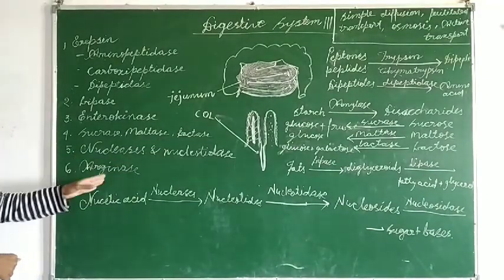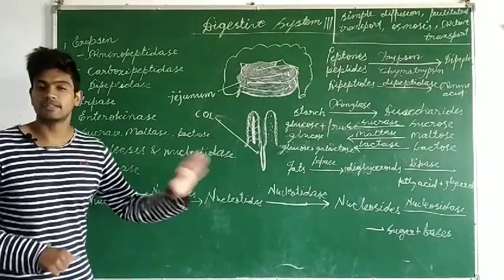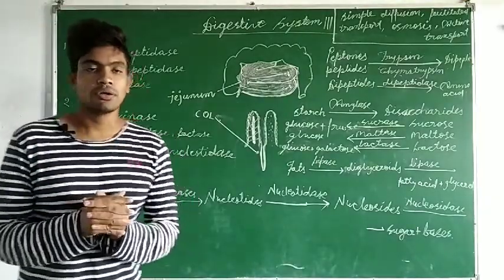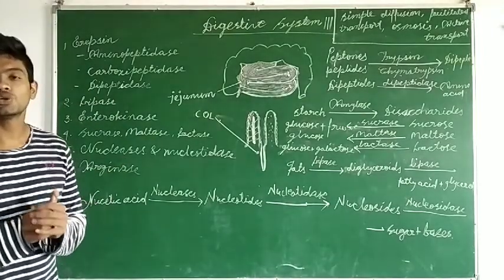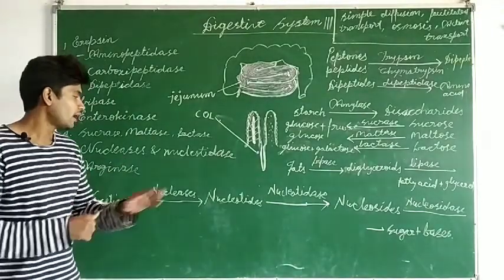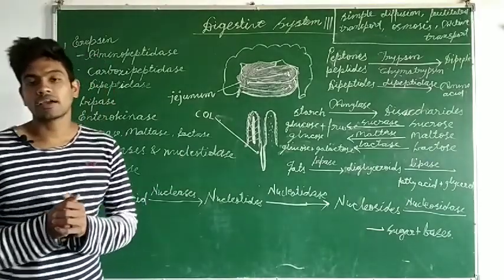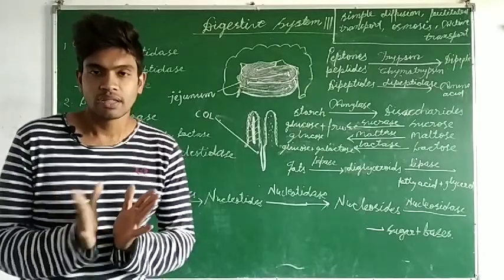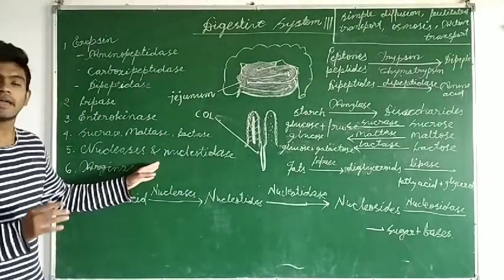The fifth group is nucleases and nucleotidase. Nucleic acid is broken down by nucleases and converted into nucleotides. Those nucleotides are then broken down by nucleotidase and converted into nucleosides. In this way they end the digestion of nucleic acids.